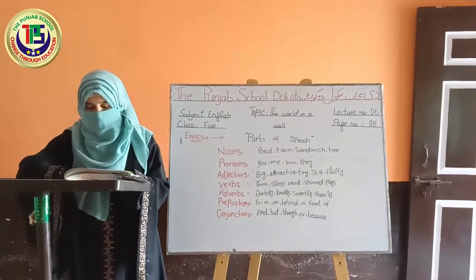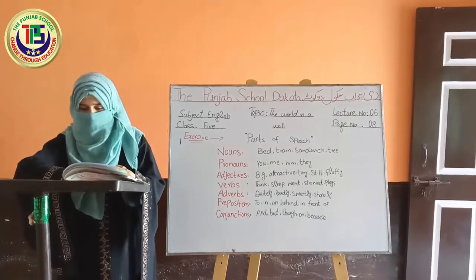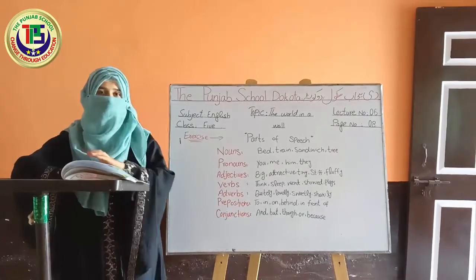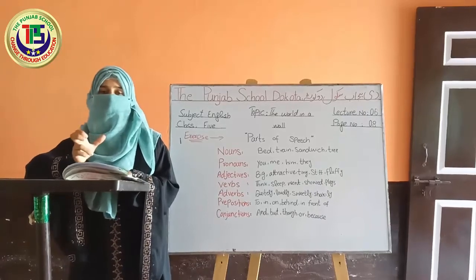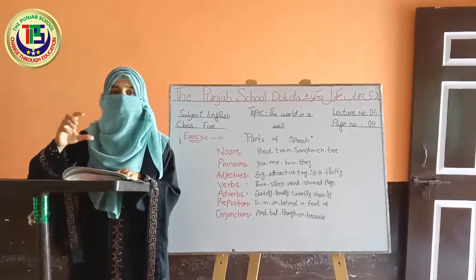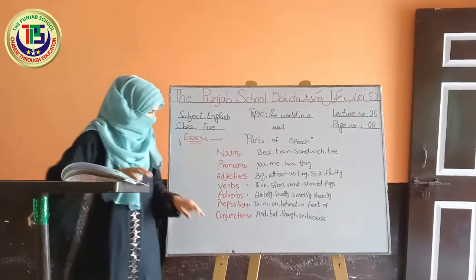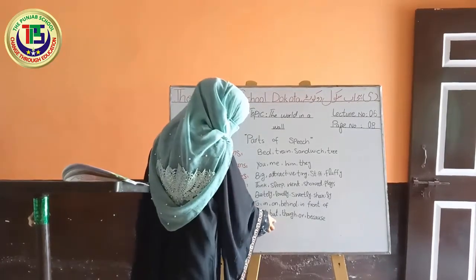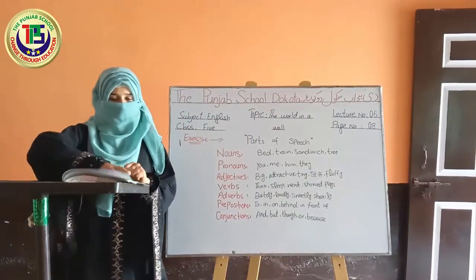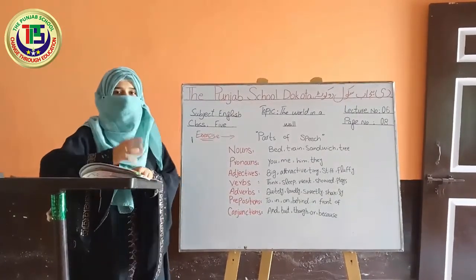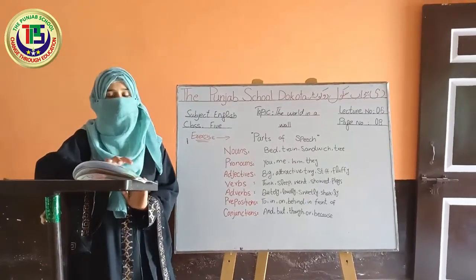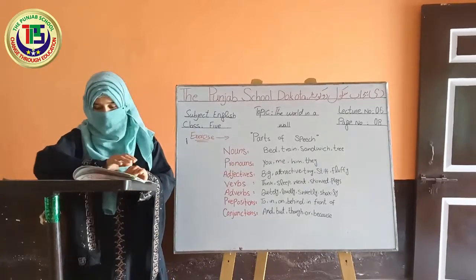Next is conjunction. A conjunction is a word or part of speech that connects sentences. یعنی کہ conjunctions وہ ہوتے ہیں جو sentences کو آپس میں ملاتے ہیں۔ اگر ایک sentence دو حصوں میں complete ہو رہا ہو تو conjunction کی ضرورت پڑتی ہے۔ Conjunctions کی examples ہیں: and, but, though, or, because۔ جب conjunctions ہوں گے تو sentence کی proper structure بنے گی۔